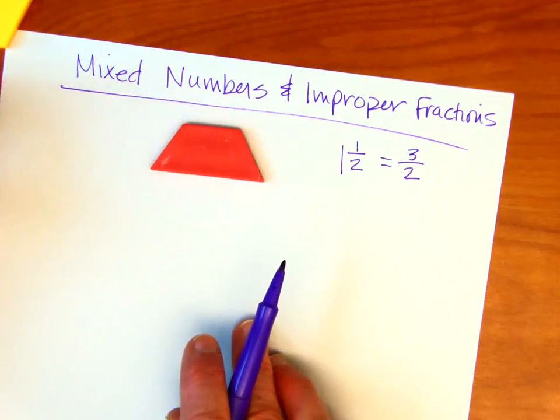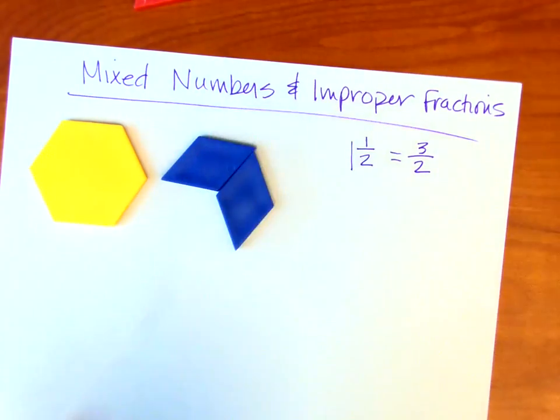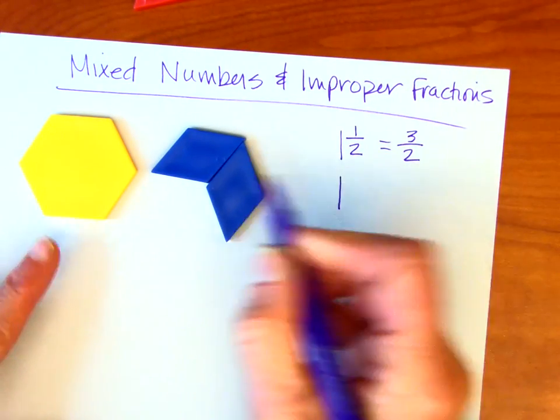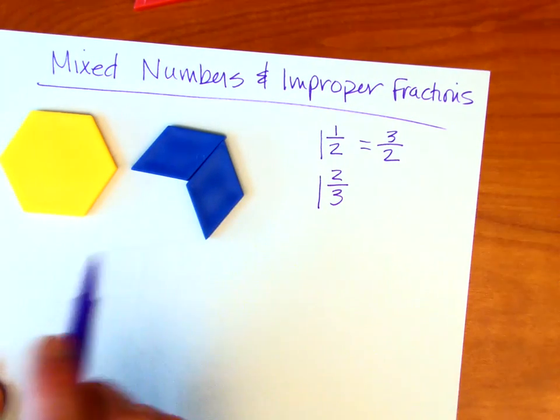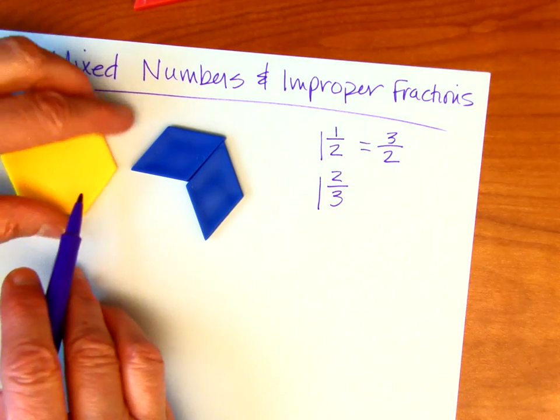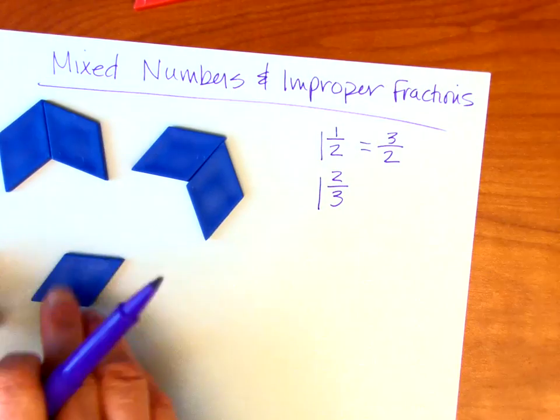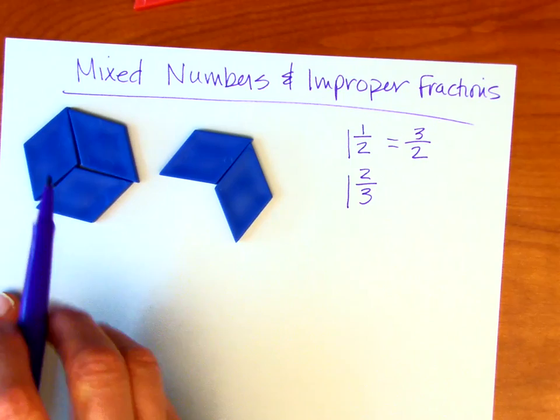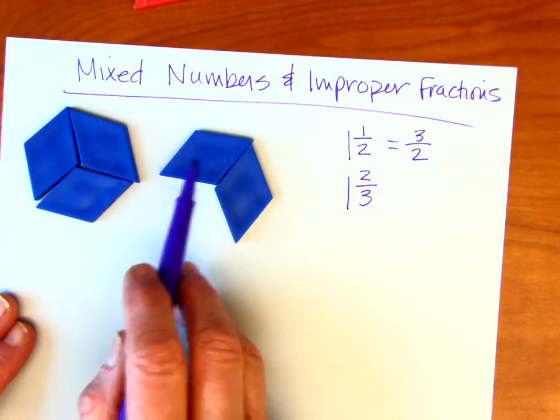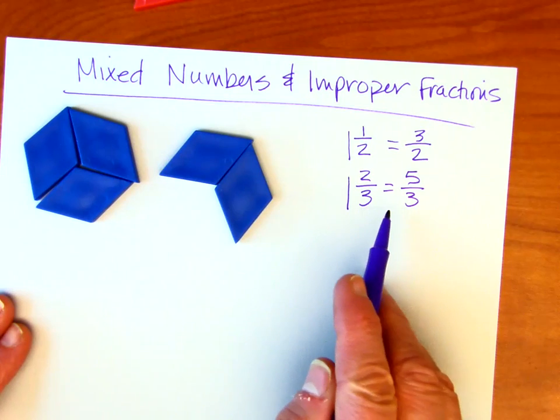So let's go ahead and do a couple of these. Here's my hexagon, and I'm going to say that we have one whole and two-thirds. Remember, each of these represents a third. Now, if I substitute this with thirds, let's see what we get. So now you can see we have one whole and two-thirds, but instead of using one whole, we've got three, four, five. So five-thirds. So one and two-thirds is equivalent to five-thirds.